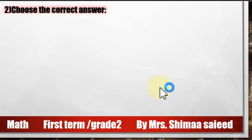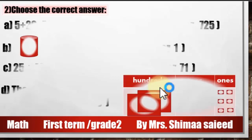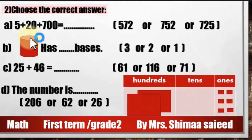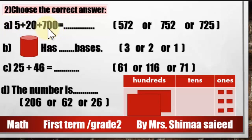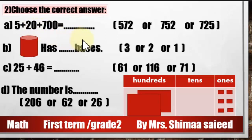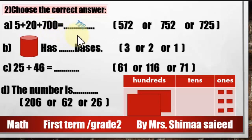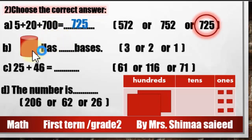Now choose the correct answer: 5 plus 20 plus 700. 5 means 5 in ones, 20 means 2 in tens, 700 means 7 in hundreds — so the answer is 725.